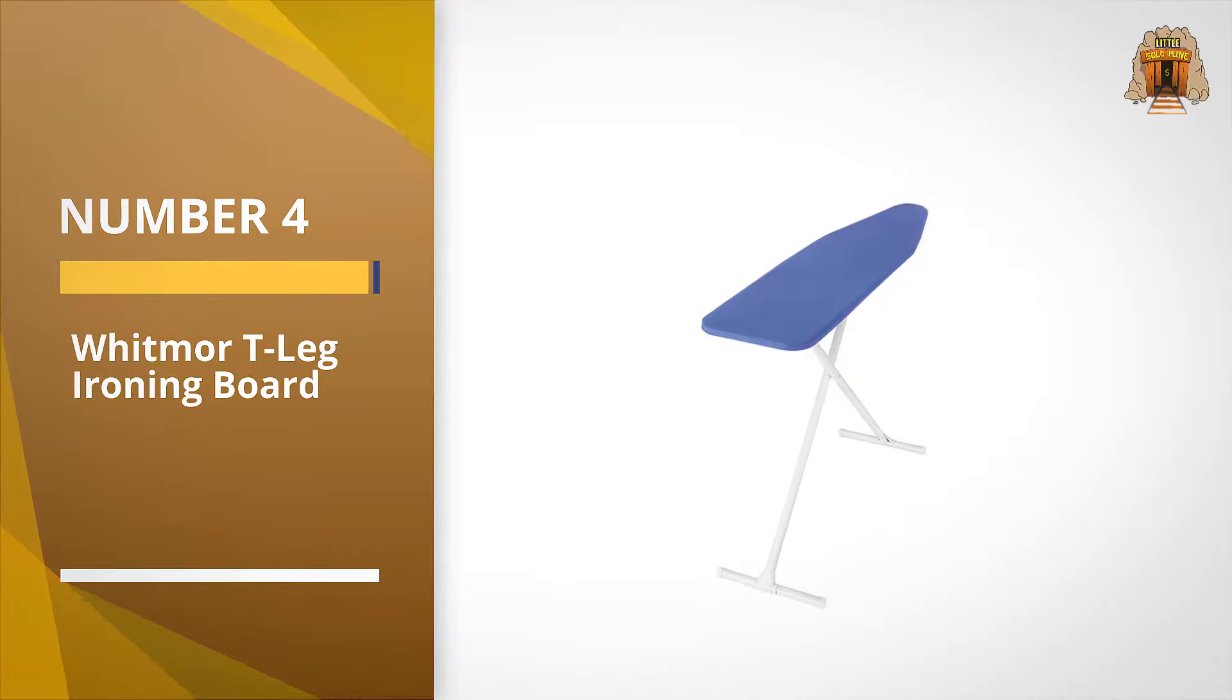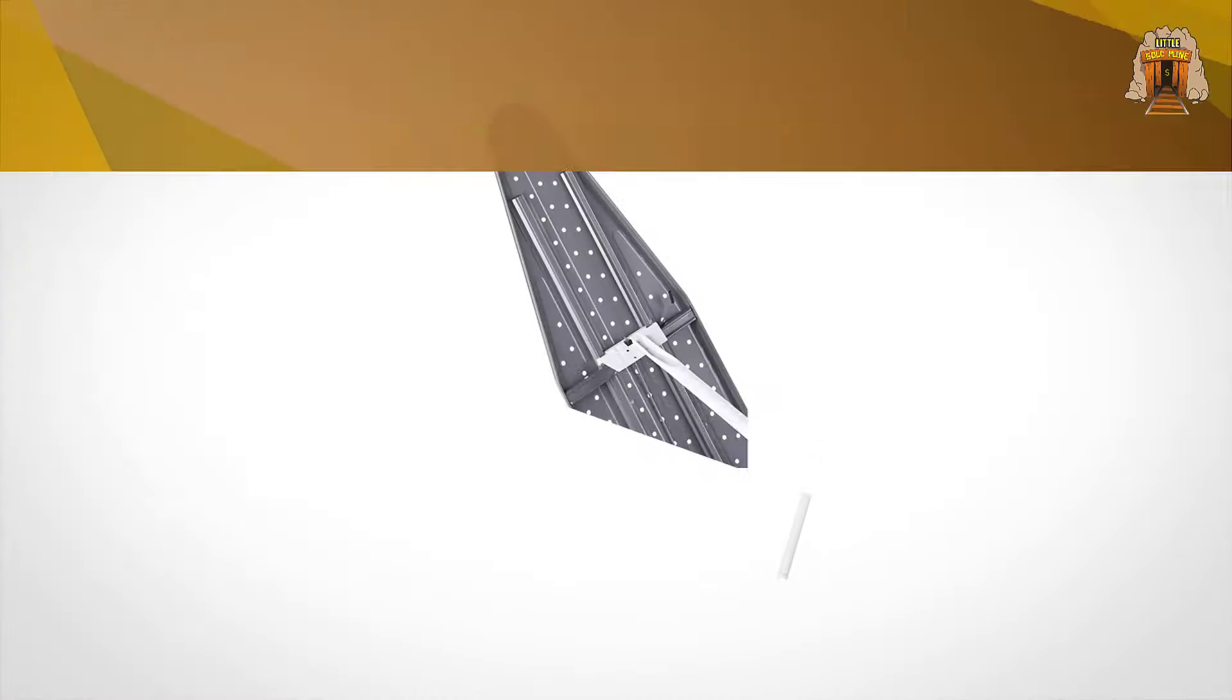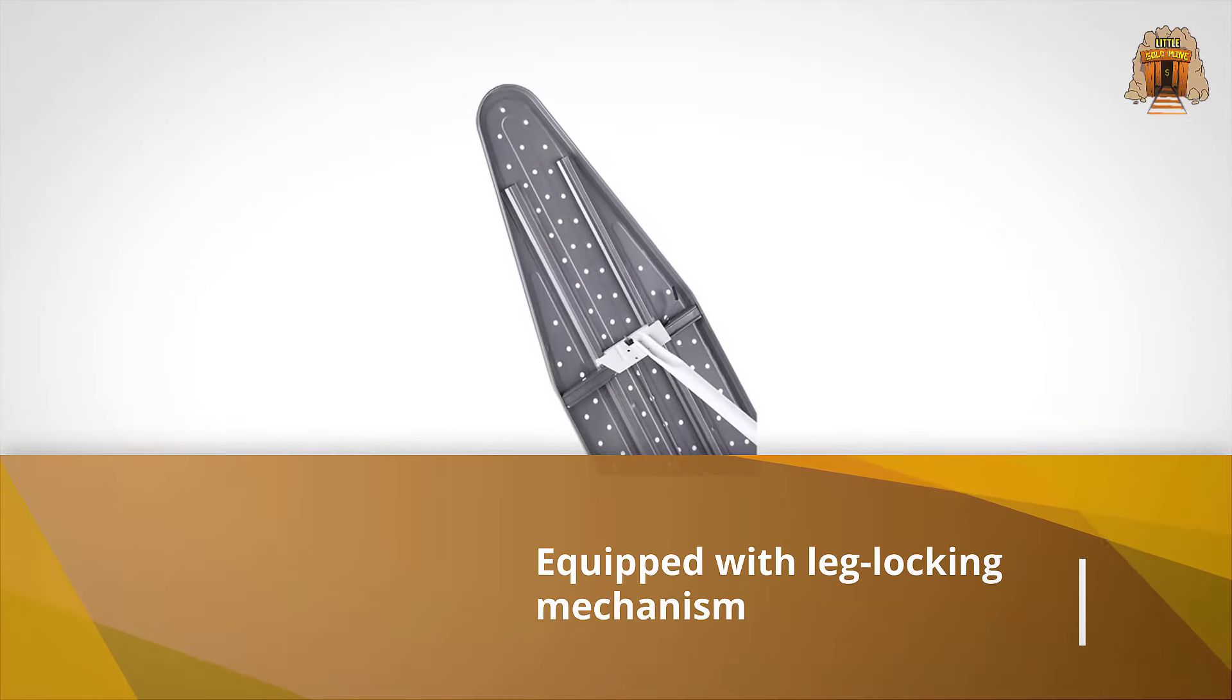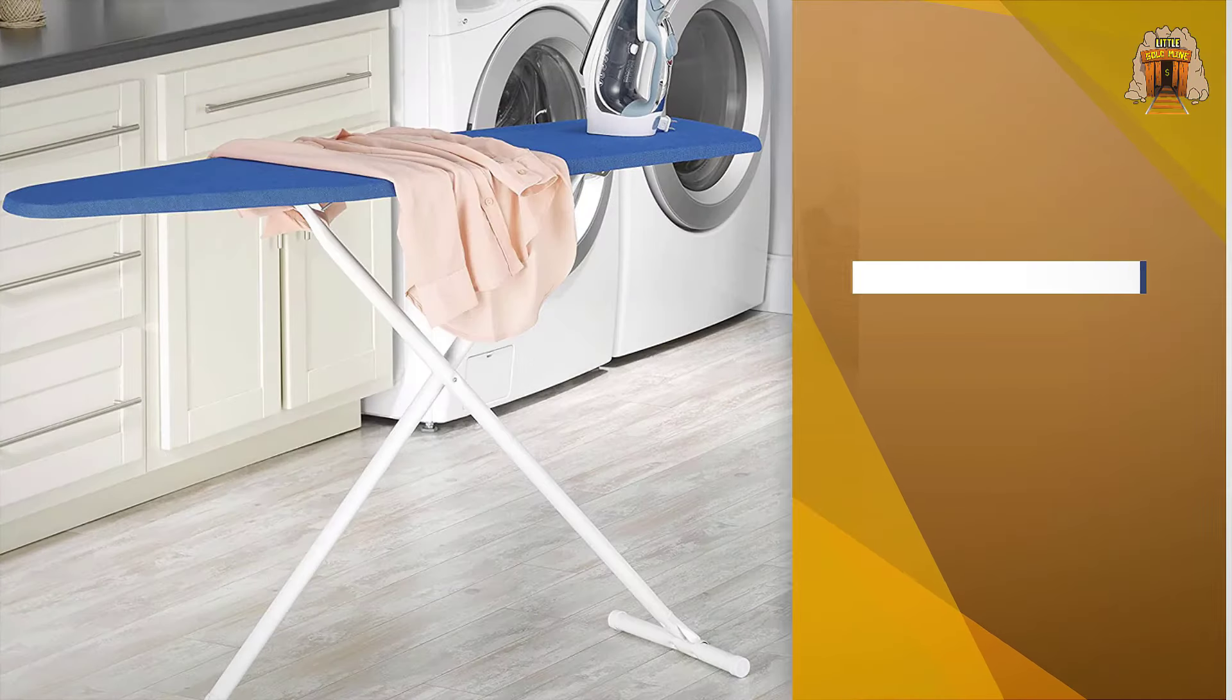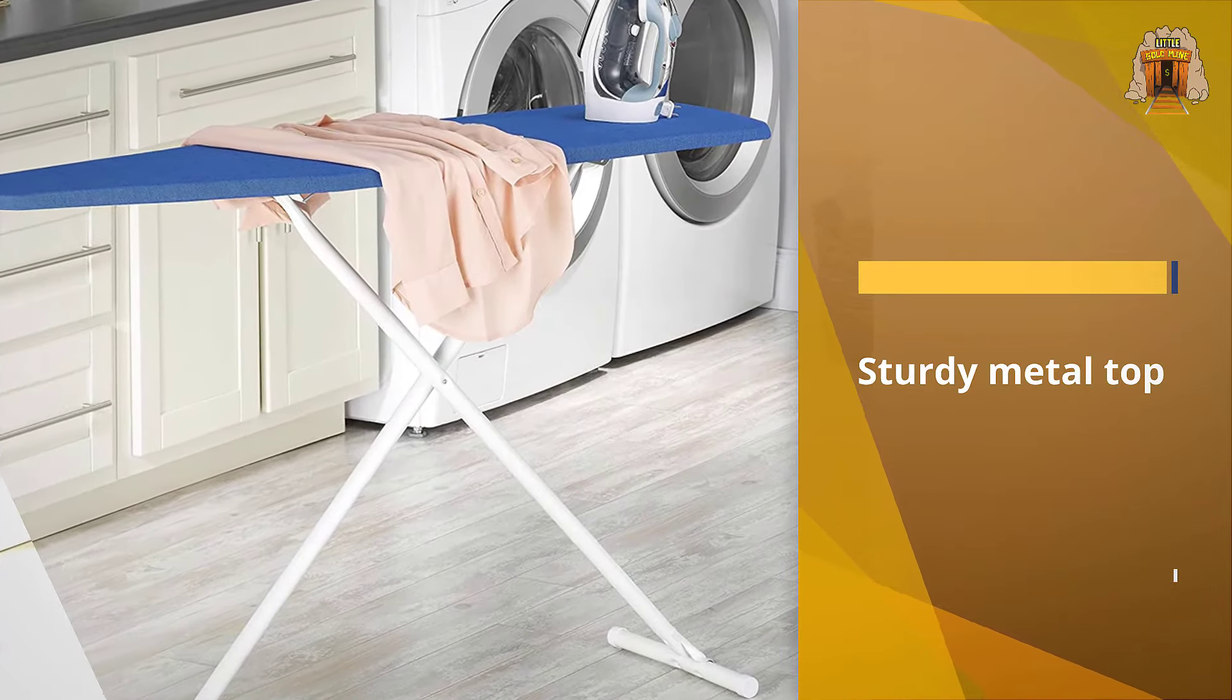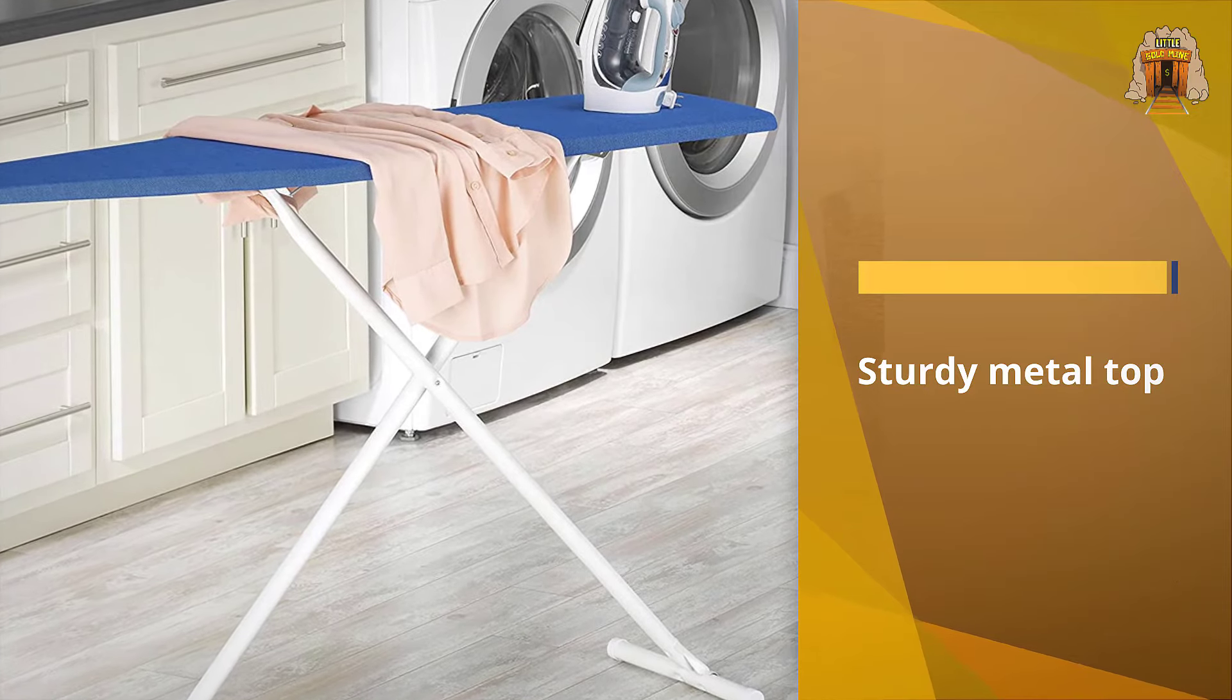Number four: Whitmore T-leg ironing board. Whitmore T-leg ironing board provides a very effective ironing surface and is the essential tool to keep your clothing pressed and wrinkle-free. It features a standard 53 inches by 13 inches top that accommodates most any size garment.